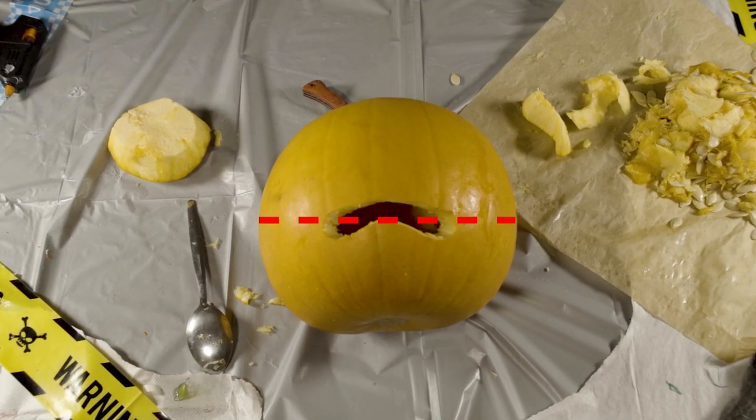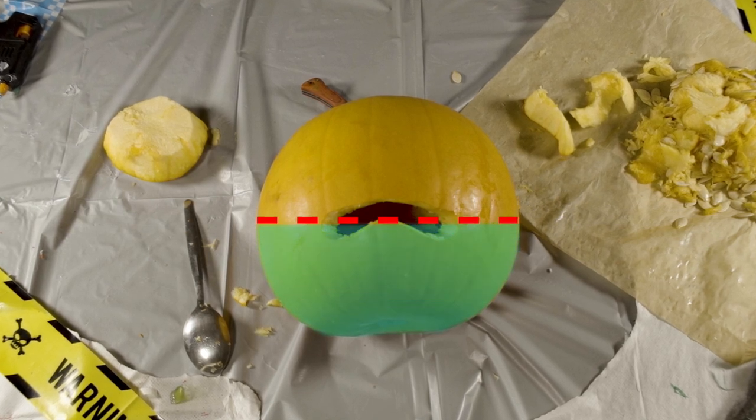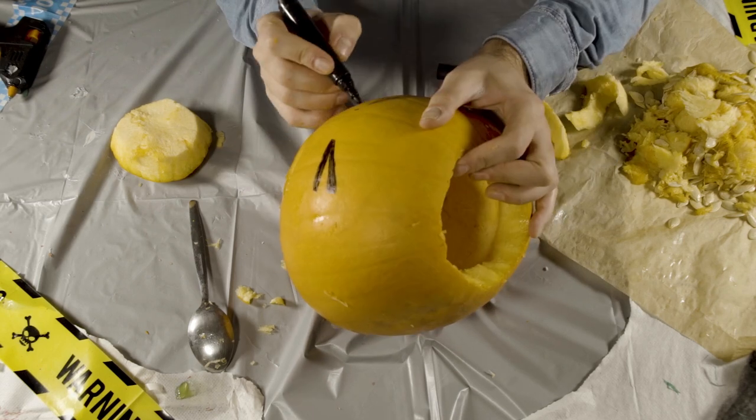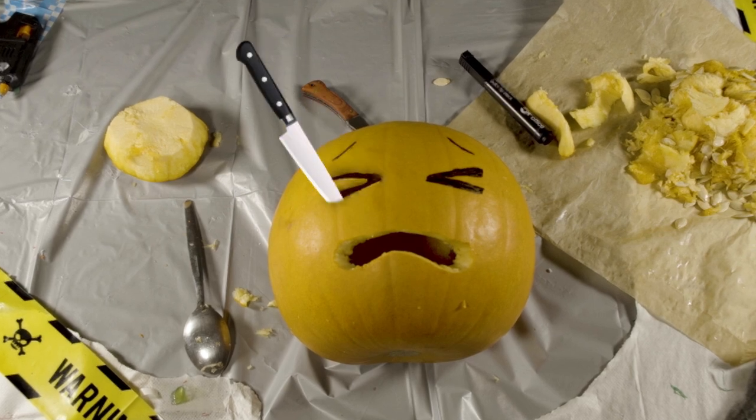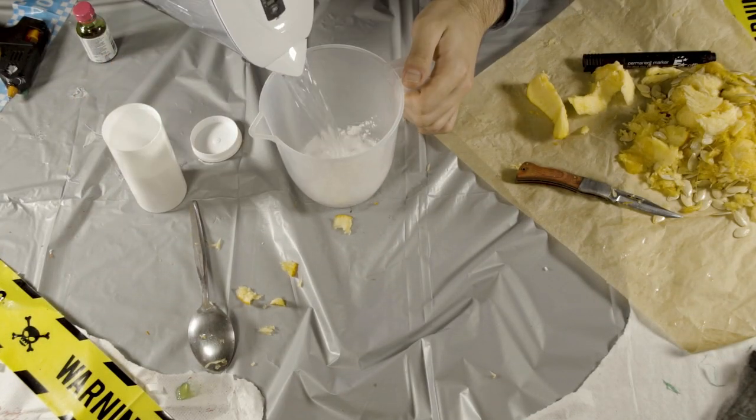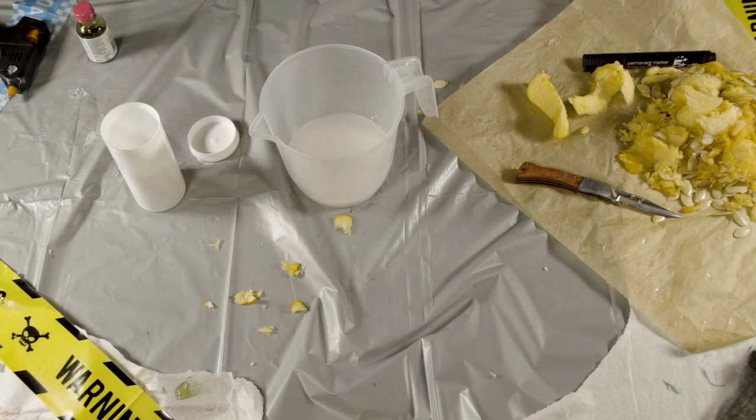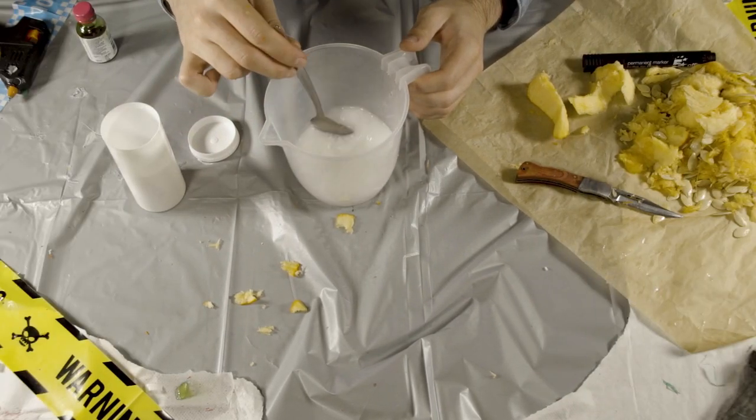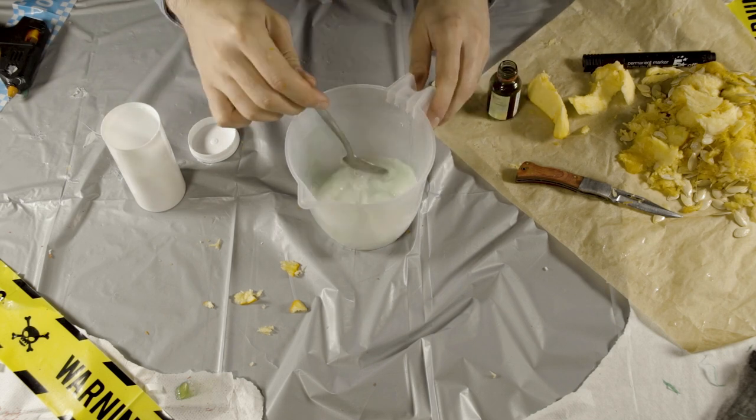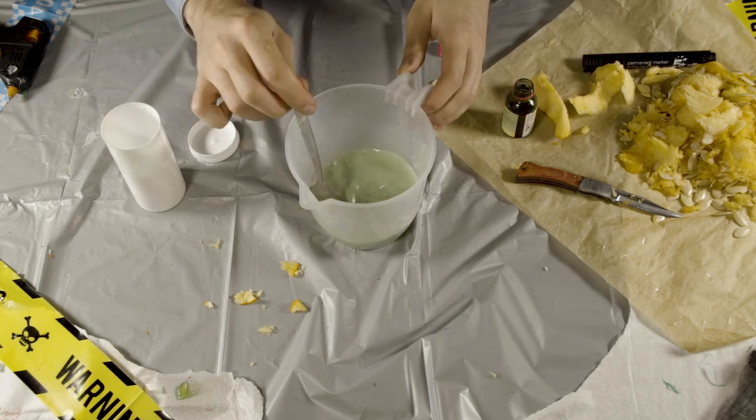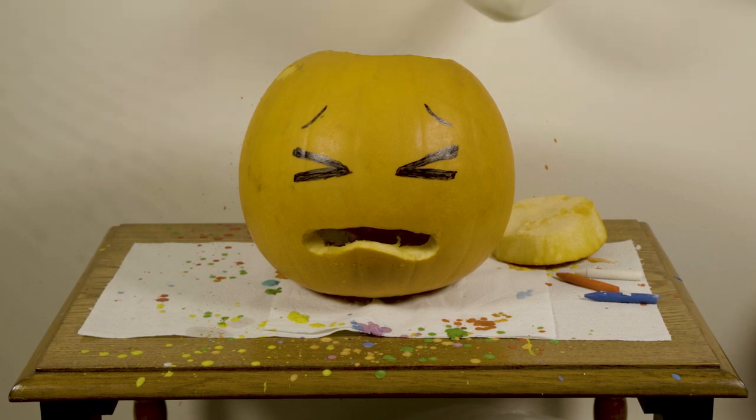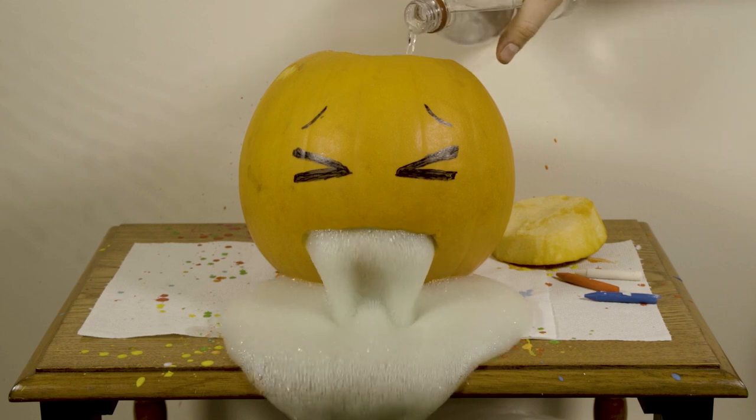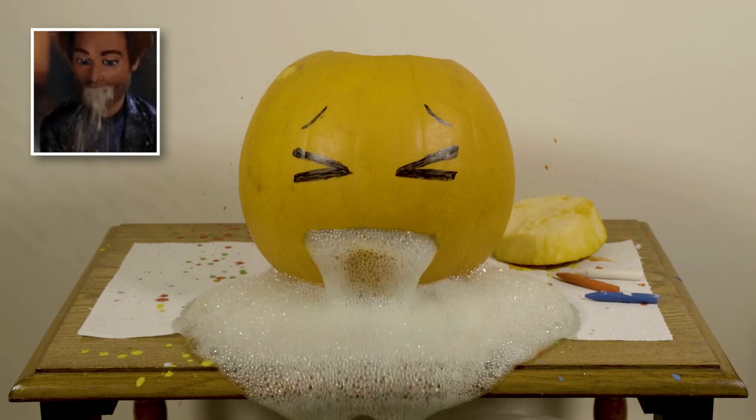Once that's done, grab a permanent marker and draw on some funny screwed up eyes, or if you're feeling extra crafty, you could carve those too. For the puke, create a simple mixture of water and baking soda. You can guesstimate how much you'll need based on the size of your pumpkin, but it's better to have too much than not enough. Add a few drops of green food dye and stir that in to create the perfect shade of vomit green. Then take the lid off your pumpkin and pour the mixture into the base. To make that sucker spew, just pour in vinegar and watch as the foamy mixture rises up and pours out of its mouth. Looks like me last Friday night.